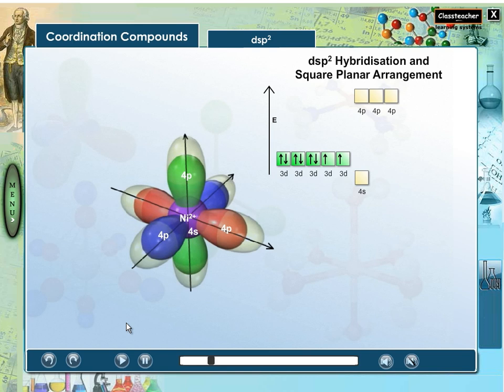In tetracyanonickel complex, due to the presence of cyanide ion which behaves as a strong ligand, electrons in 3d orbital of nickel-2-ion get paired up.